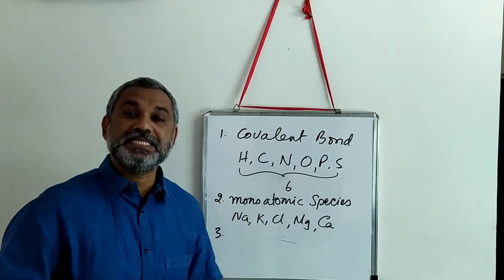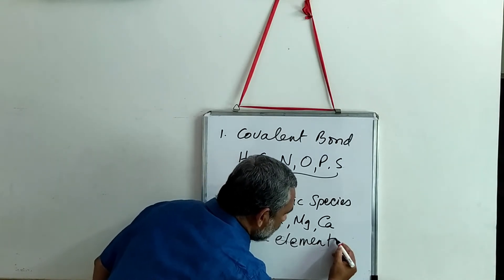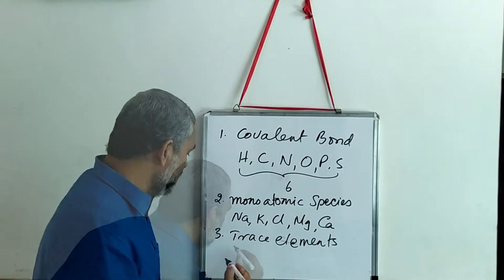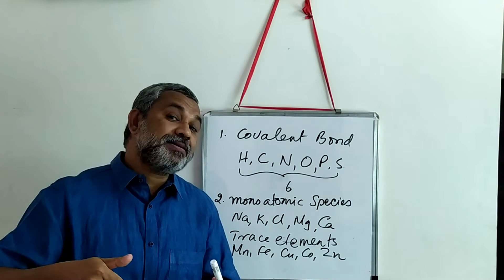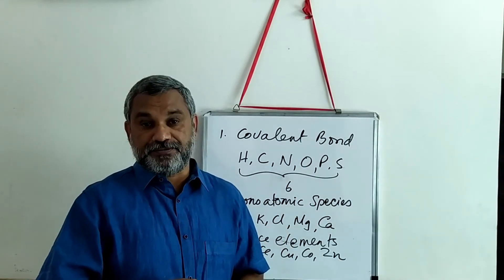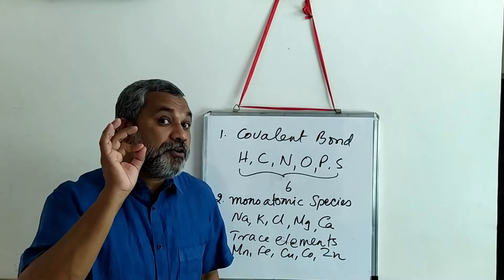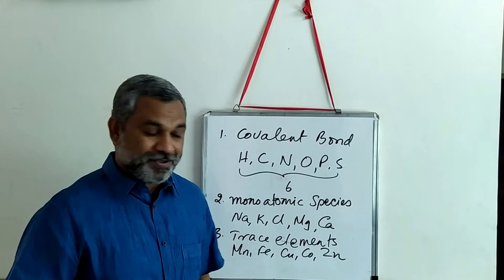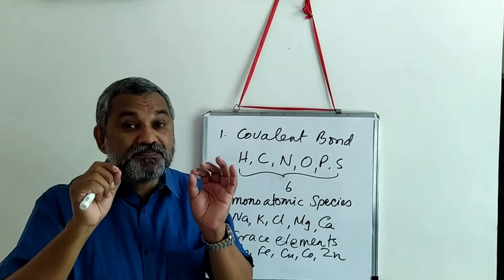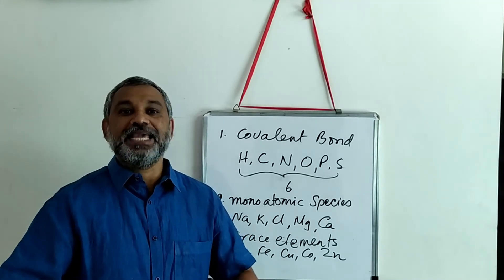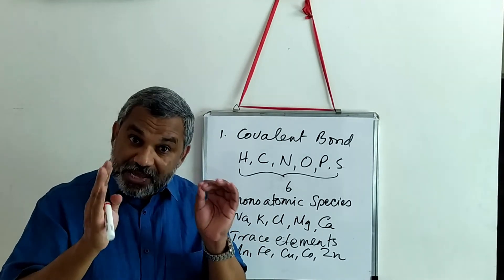In the third category of elements as part of life are the trace elements. Examples of trace elements can be manganese, iron, copper, cobalt, and zinc. Nature would have selected these elements because they have more than one oxidation state — for example, ferric to ferrous, cupric to cuprous. This makes them very important molecules for the transfer of electrons in the living system. You would have already studied the role of copper and iron in the electron transport system — they become very efficient in transporting electrons.